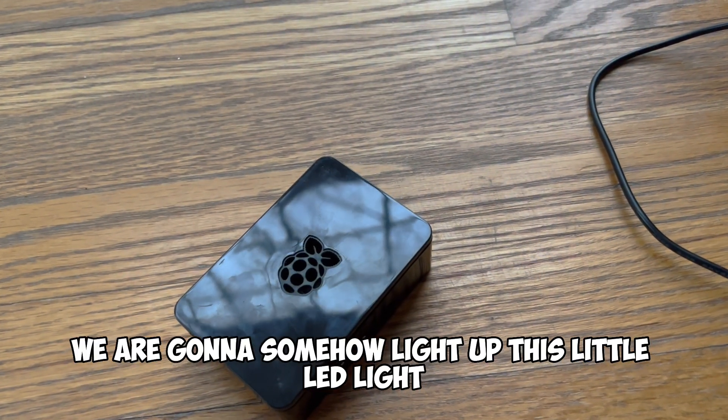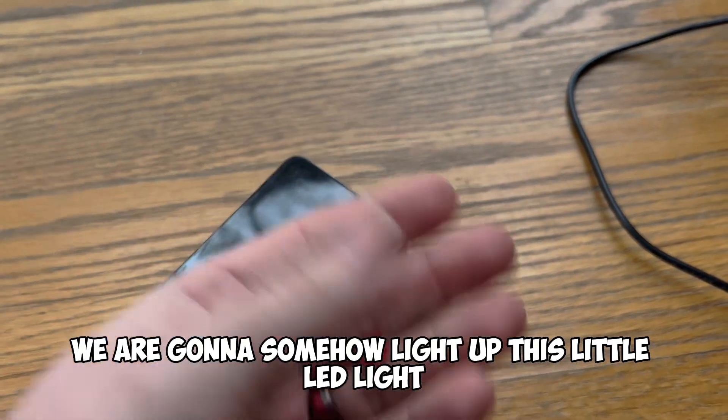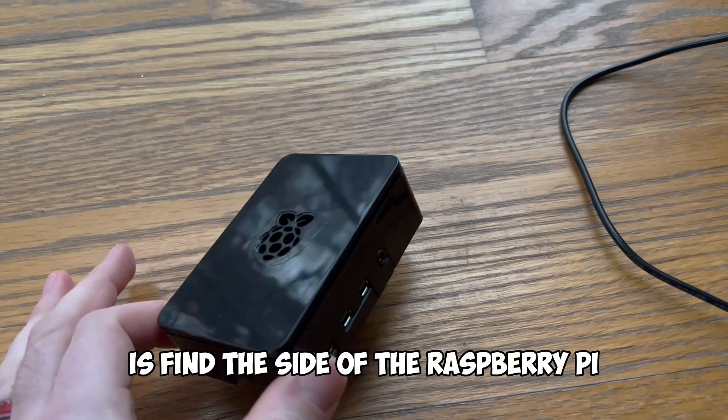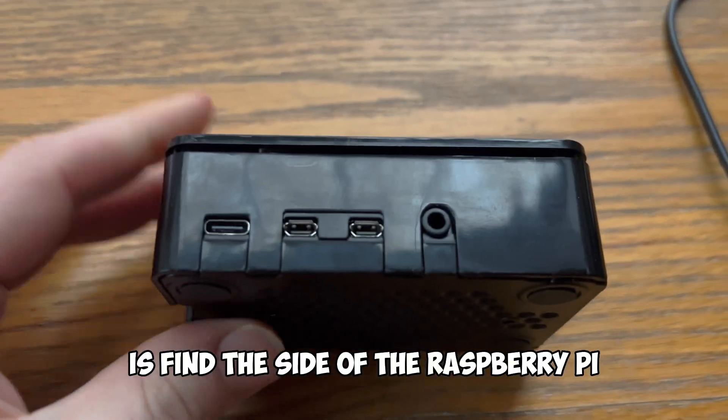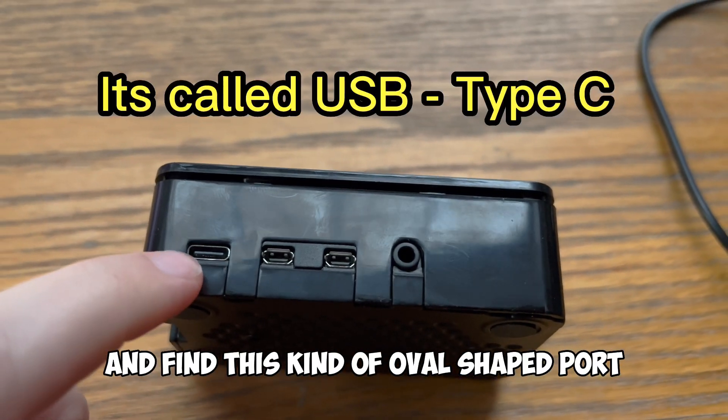Today with our Raspberry Pi we are going to somehow light up this little LED light. The first thing you're going to need to do is find the side of the Raspberry Pi and find this kind of oval shaped port.